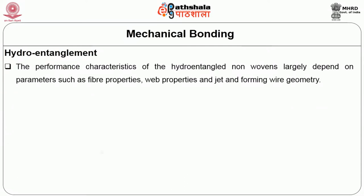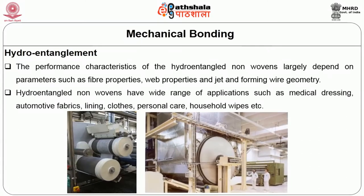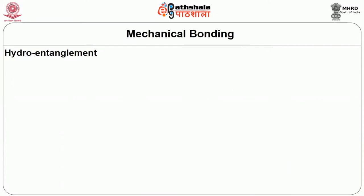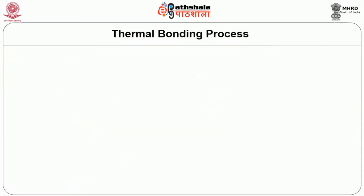The performance characteristics of hydro-entangled non-wovens largely depend on parameters such as fiber properties, web properties, and jet and forming wire geometry. Hydro-entangled non-wovens have a wide range of applications such as medical dressings, automotive fabric linings, clothing, personal care, and household wipes. The schematic below shows the working of a hydro entanglement technique — you can see a circular frame with vacuum, over which the fibrous web is passed, and the high-pressure water jets are normal to it. As the water impinges on the fibrous mat, consolidation occurs, and excess water is drawn through the vacuum at the bottom.